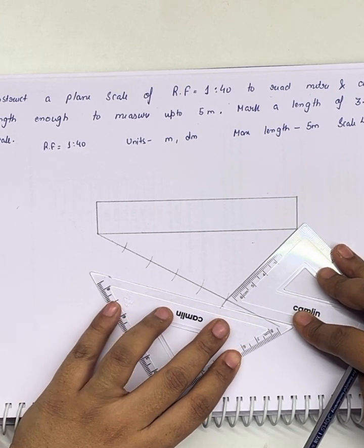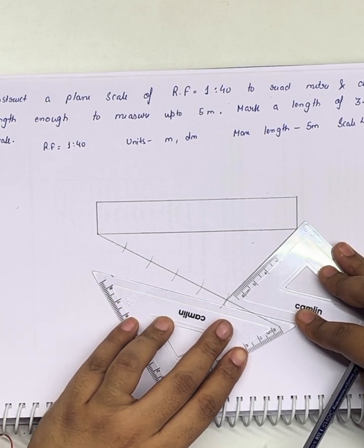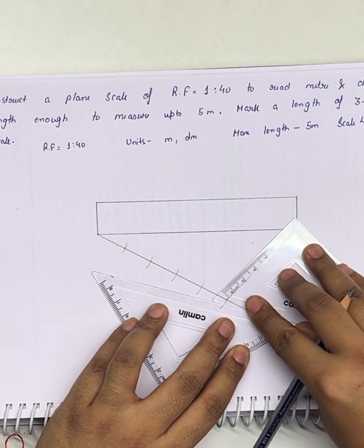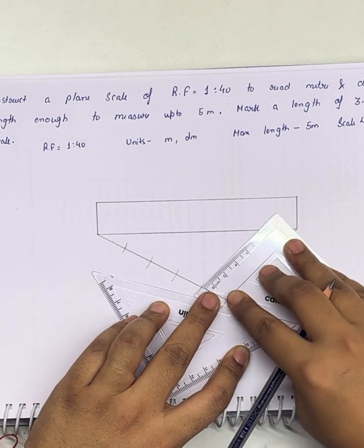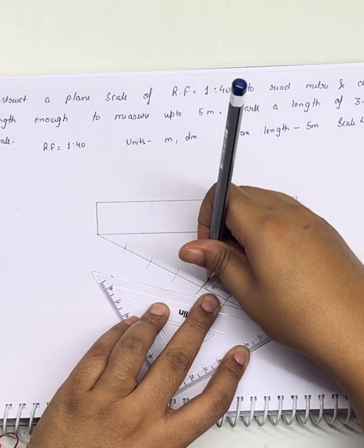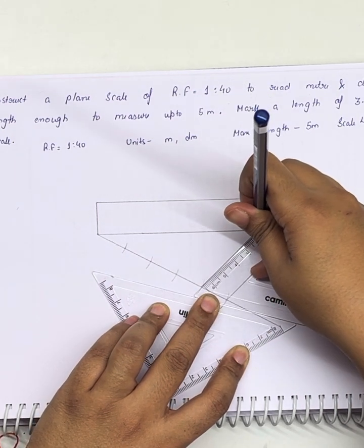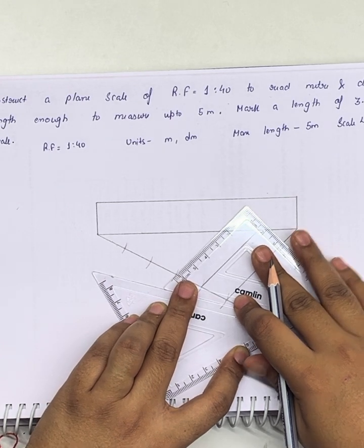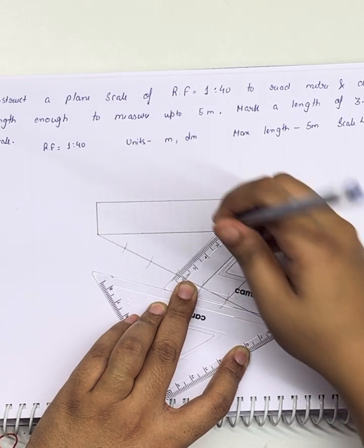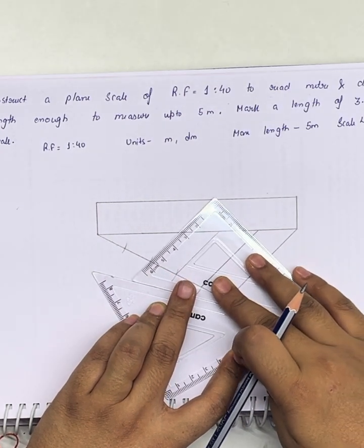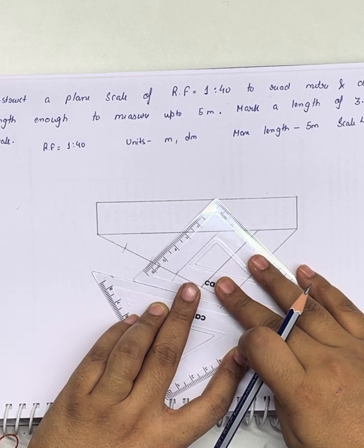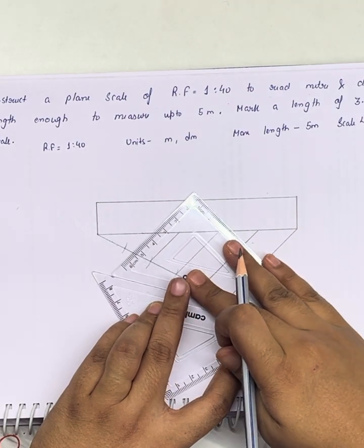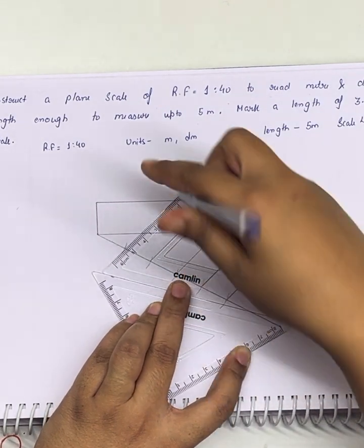My distance is this. Second line, third line, fourth. This is the fifth division.